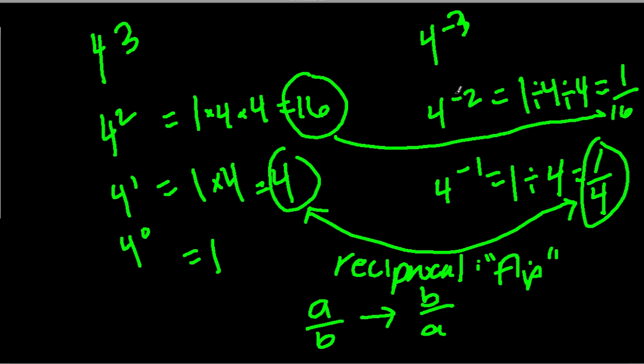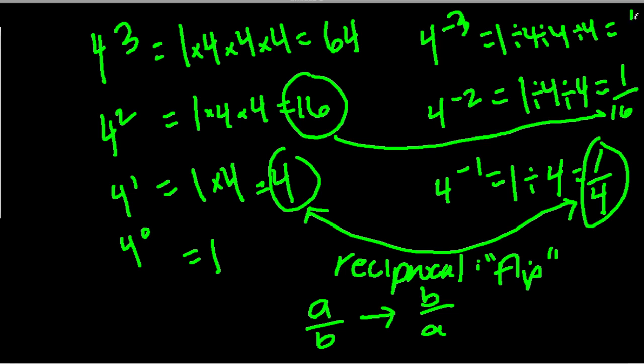And that's what 4 to the negative second would be. Same thing with this number. 1 times 4 times 4 times 4 is 64. So instead of going through the steps of figuring out 1 divided by 4 divided by 4 divided by 4, I can look at the pattern and realize the answer has to be the reciprocal of 64, which is 1 over 64.